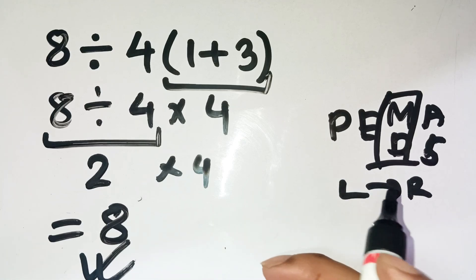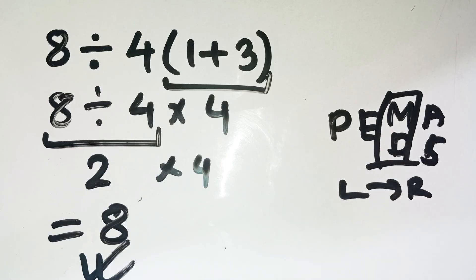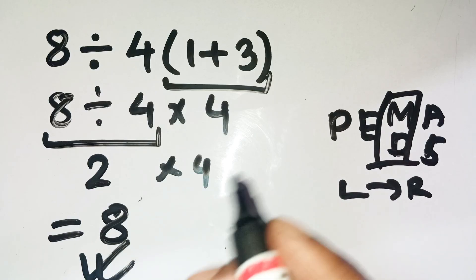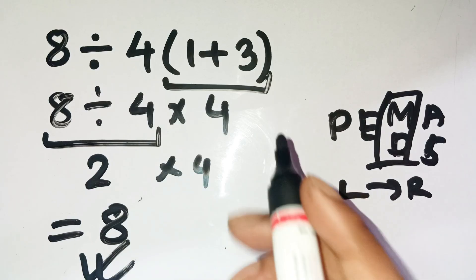So the next time you see a mix of division and multiplication like this, just remember, go left to right. No shortcuts, no skipping. So the correct answer is 8, not one half. Got a different take? Drop your thoughts in the comments. I'd love to hear your logic.